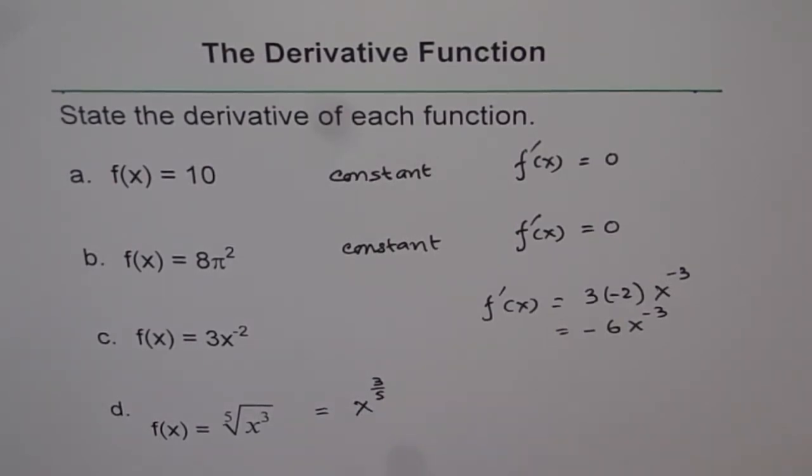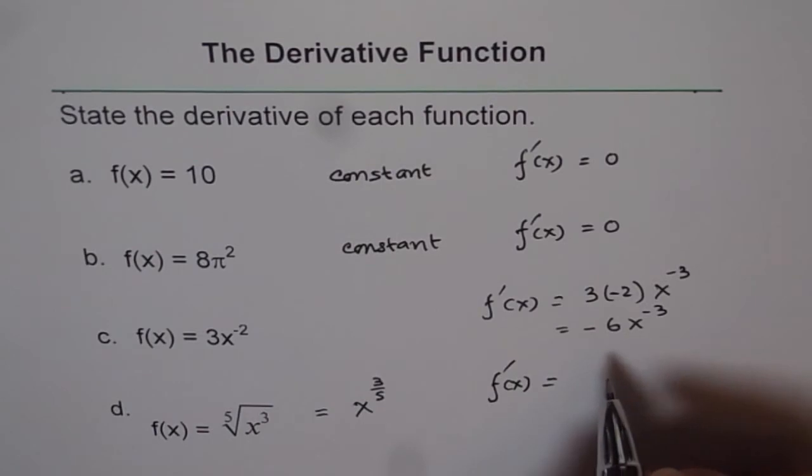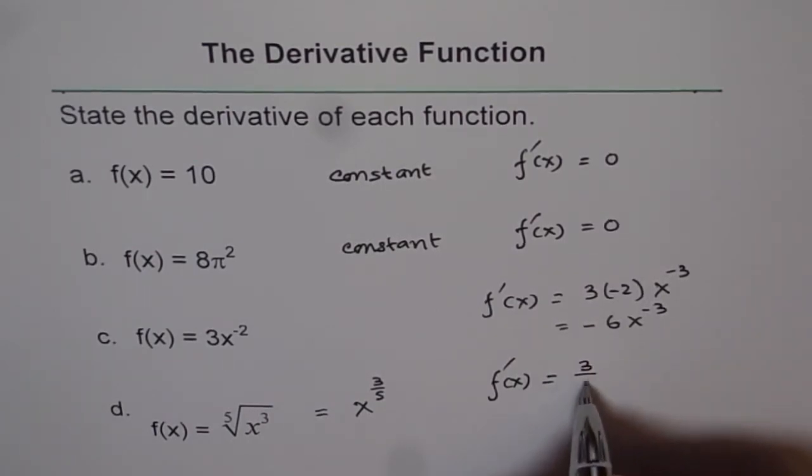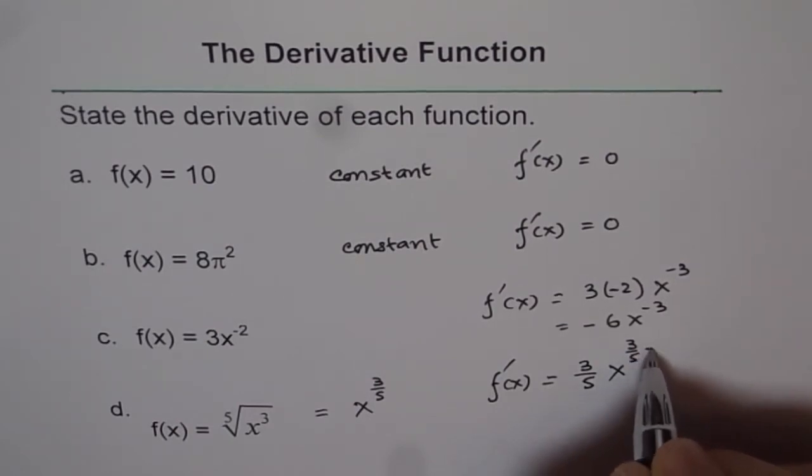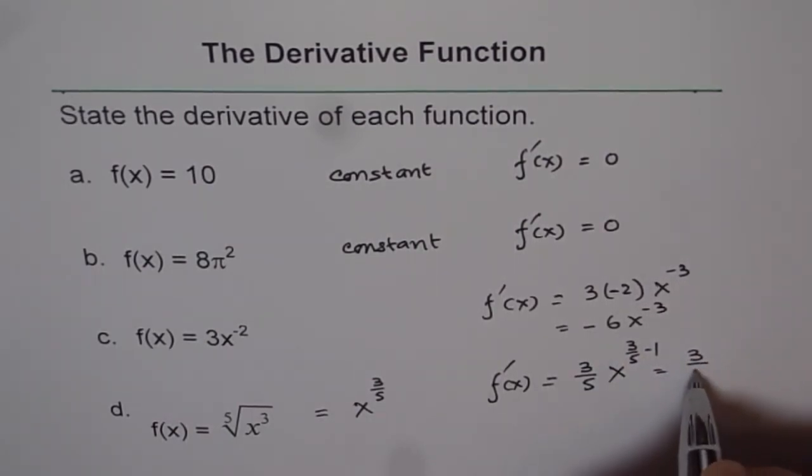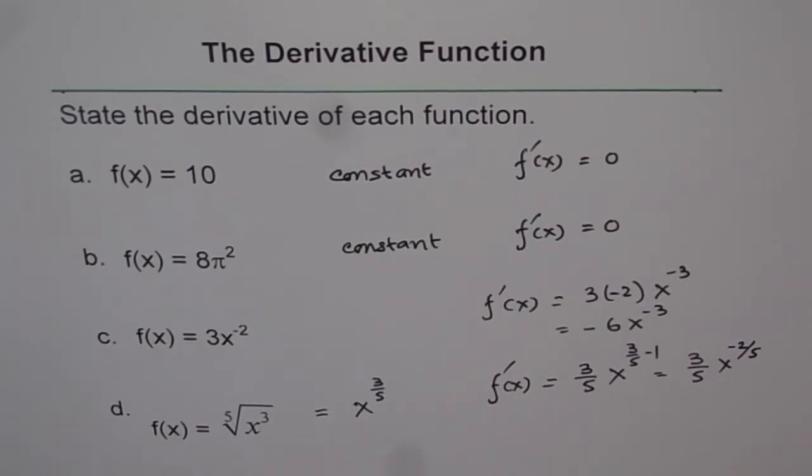So that becomes your function. So the derivative of this function at any given point will be 3 over 5 x to the power of 3 over 5 minus 1. So that becomes your answer.